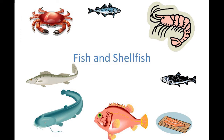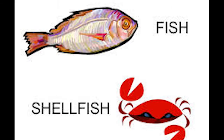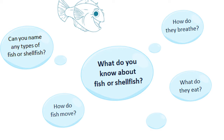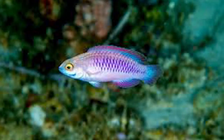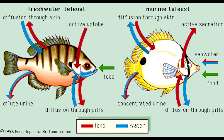First of all, we are going to know about fishes. Fish is the aquatic vertebrate which has fins for swimming and gills for breathing, with salt and fresh water varieties.